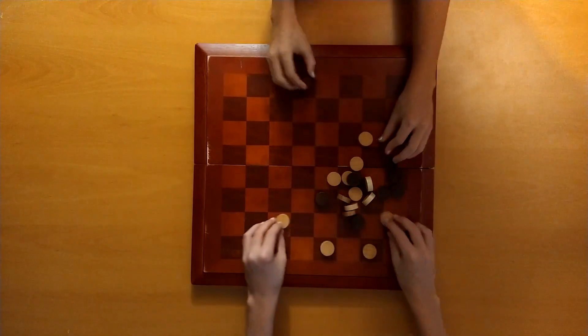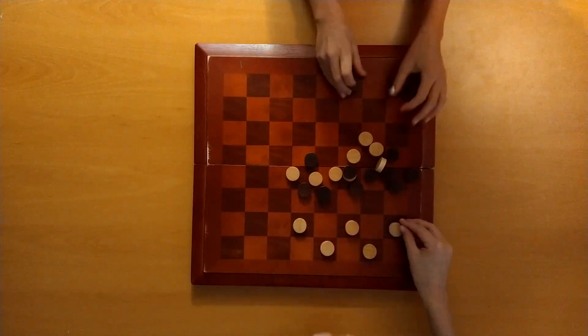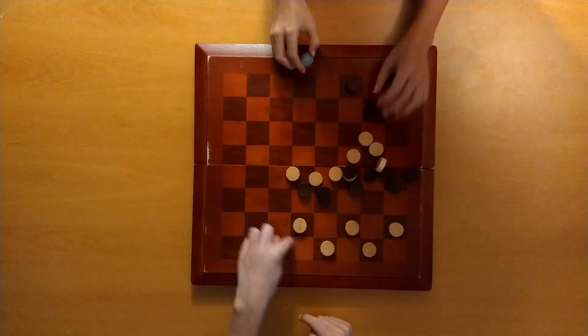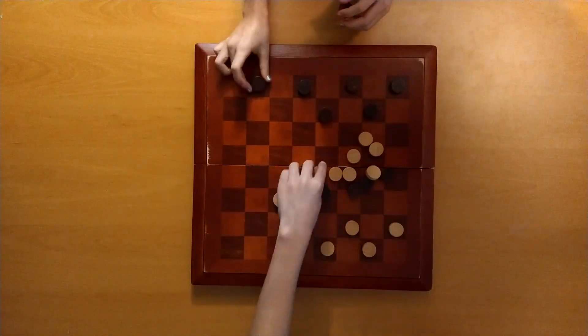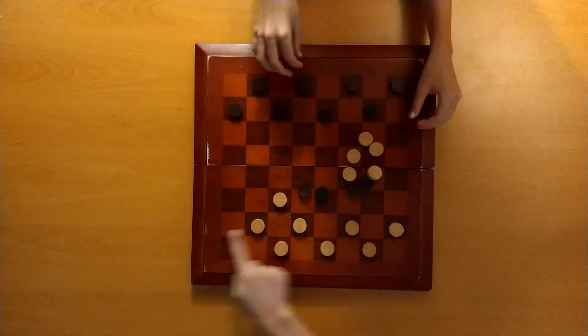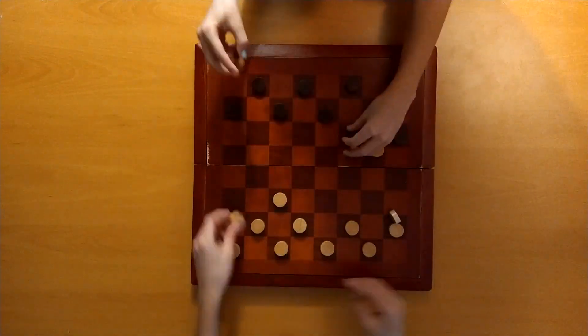Lay out the board and choose white or black. Fill in the first three rows with the checkers on the black squares. If the pieces have a crown, flip it so the crown is face down. White goes first.